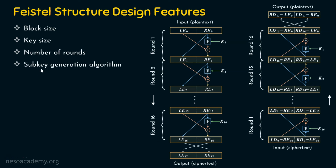The fourth design feature is the sub-key generation algorithm. We do not feed individual keys for every round; rather, a single key generates all round keys. We need a complex sub-key generation algorithm so that a cryptanalyst cannot break it easily. The fifth feature is the round function, which must have a complex design in order to achieve both confusion and diffusion properties.